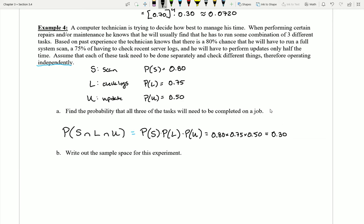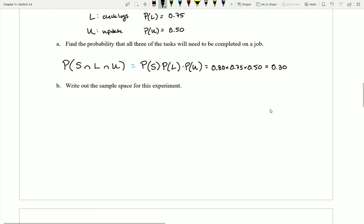Take a look at part B. Can I write out a sample space for this experiment? That is, a sample space for what are all of the different things that this guy might have to do when he shows up on the job? Well, we've already kind of seen one of the options, right? Like, he might have to do all three of the tasks. That's possible. I have to do three different things.